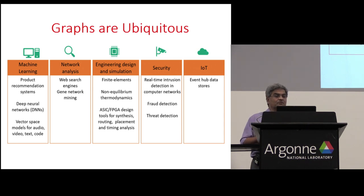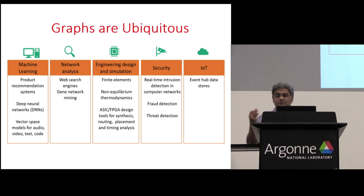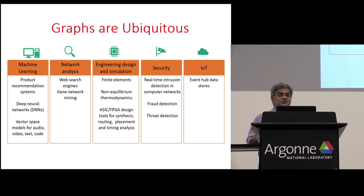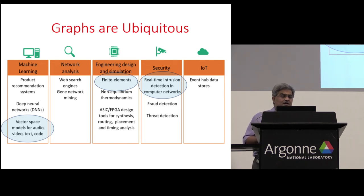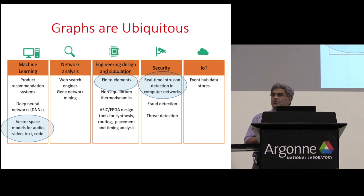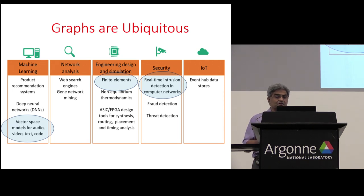One of the things I try to do is convince people that, depending on how you look at your data, graphs are actually ubiquitous. They show up in a lot of machine learning applications, network analysis, web search engines, security, internet of things, and even in more traditional areas like engineering design and simulation. I'm going to focus on a few where we've done work that our industrial collaborators have also liked: vector space models for audio, video, text, and code; real-time intrusion detection in computer networks; and finite element mesh generation and refinement.